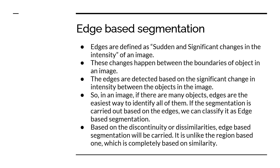The most important and most followed technique is edge based segmentation. An edge is a sudden and significant change in the intensity of an image. When navigating from one object to another in the picture, there is an intensity change between them — these changes happen at the boundaries of objects. For example, moving from a cup to a cycle in an image, there will be a definite and significant intensity change. These edges can be detected based on this intensity change, and if segmentation is carried out based on these edges, we call it edge based segmentation.